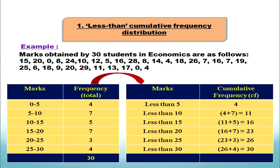For less than cumulative frequency distribution, we use the upper limits of the classes. The upper limits are 5, 10, 15, 20, 25, 30. So we write: less than 5, less than 10, less than 15, less than 20, less than 25, less than 30.